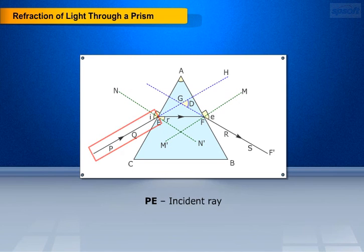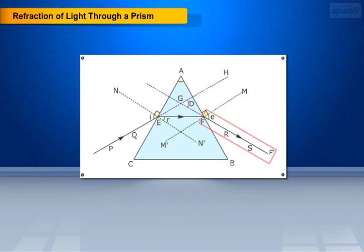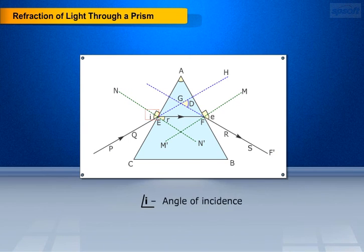Here P is incident ray, EF is reflected ray, FF' is emerged ray, angle A is angle of the prism, angle i is angle of incidence, angle r is angle of reflection, angle e is angle of emergence, angle D is angle of deviation.